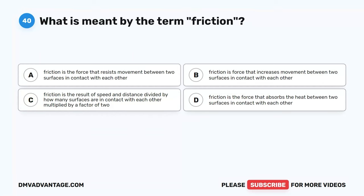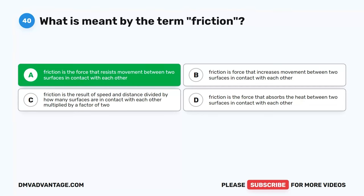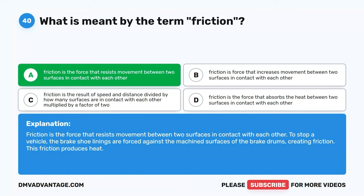Question 40. What is meant by the term friction? A. Friction is the force that resists movement between two surfaces in contact with each other. B. Friction is the force that increases movement between two surfaces in contact with each other. C. Friction is the result of speed and distance divided by how many surfaces are in contact, multiplied by a factor of two. D. Friction is the force that absorbs the heat between two surfaces in contact with each other. The correct answer is A. Friction is the force that resists movement between two surfaces in contact with each other. To stop a vehicle, the brake shoe linings are forced against the machined surfaces of the brake drums, creating friction that produces heat.